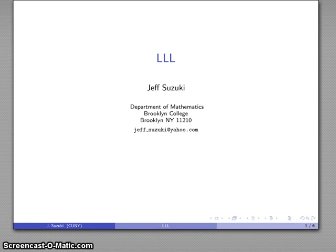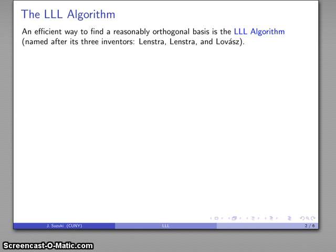Let's take a look at an algorithm for reducing lattice vectors, known as LLL. This is after the names of its three inventors: Lenstra, Lenstra, and Lovász. This is a reasonably efficient way of finding a reasonably orthogonal basis for a lattice.